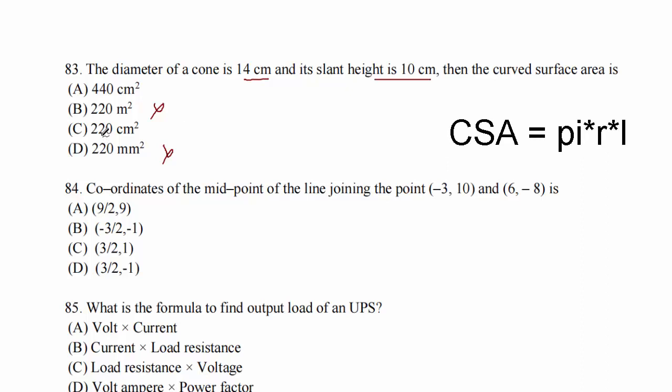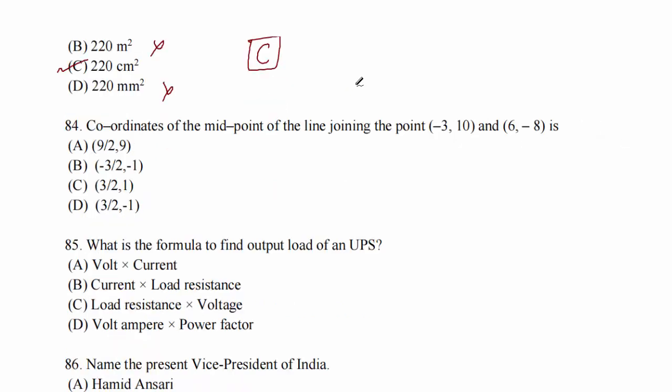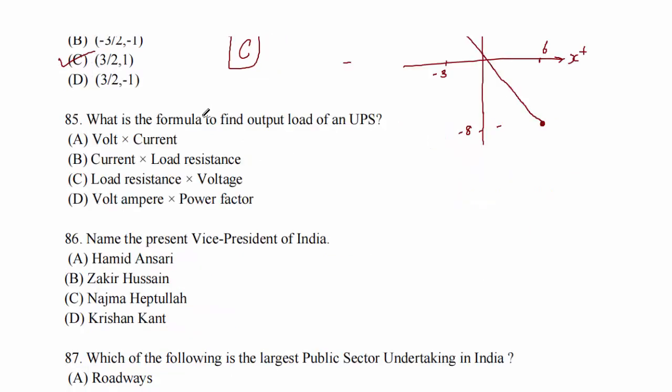Question 83: the diameter of the cone is 14 cm and its slant height is 10 cm. The curved surface area is 220 cm². Eliminate options with wrong units immediately. Question 84: coordinates of the midpoint of the line joining points (-3, 10) and (6, -8). The midpoint formula gives us (3/2, 1). Option A.